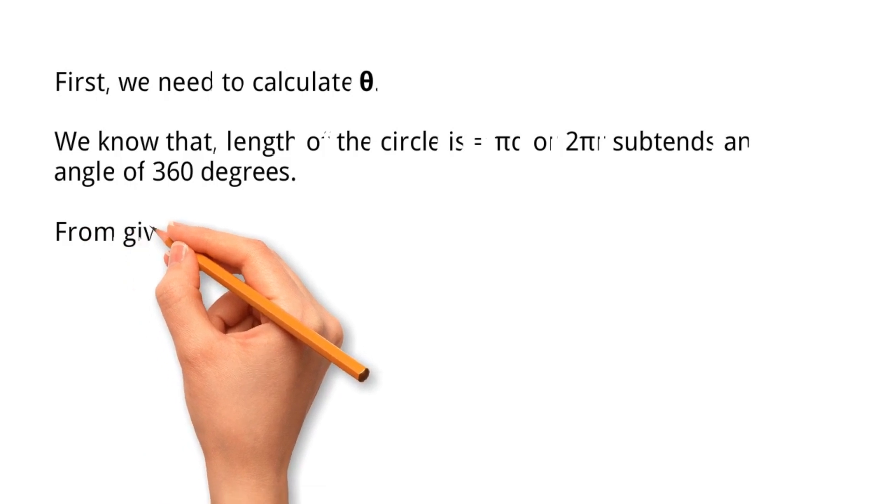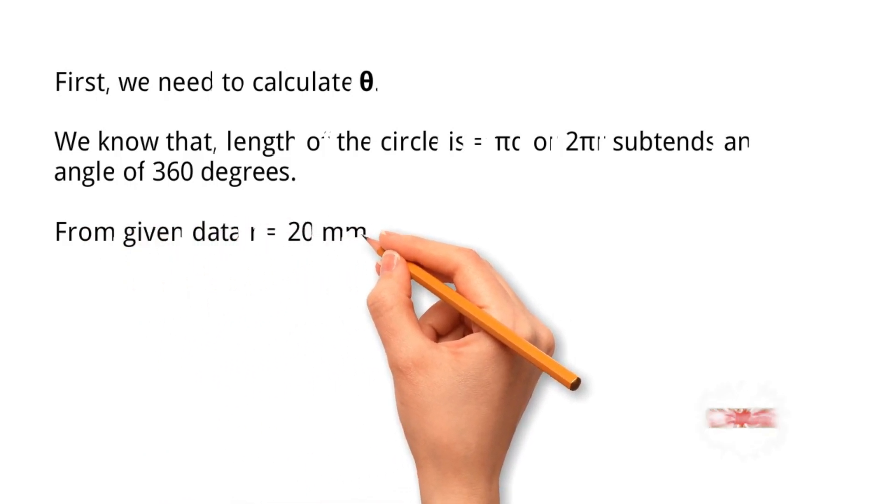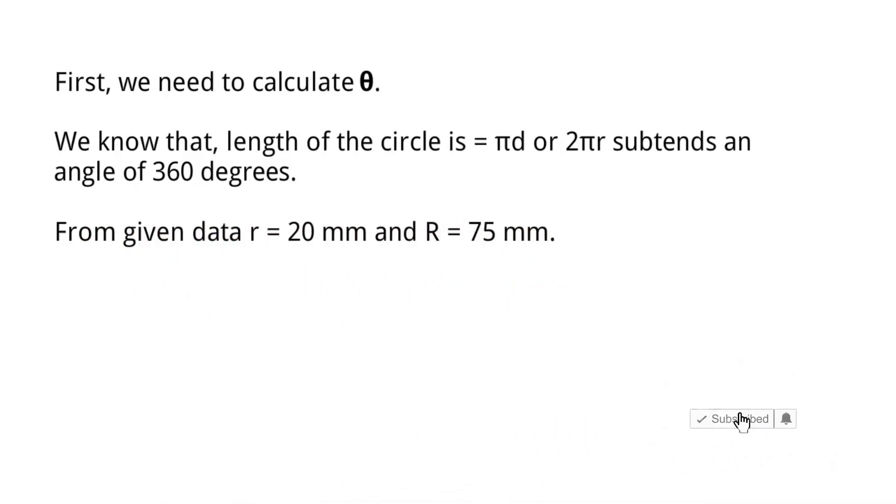Given data: small r equals 20 mm and capital R equals 75 mm. Theta equals small r by capital R into 360 degrees. We'll get theta equals 96 degrees.